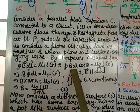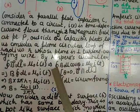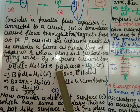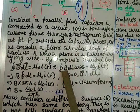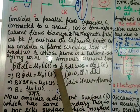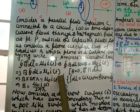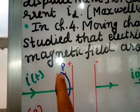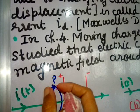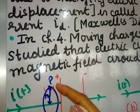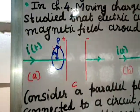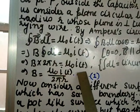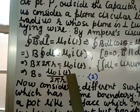B·dl can be written as B dl cosθ = μ₀i(t). Since B is parallel to dl, θ = 0 and cos0 = 1. B is constant on the loop surface, so B ∮dl = μ₀i(t). The integral ∮dl is the circumference 2πr, so B × 2πr = μ₀i(t), giving B = μ₀i(t) / 2πr. Call this equation 1.